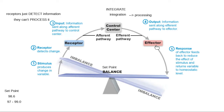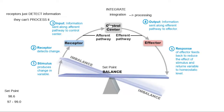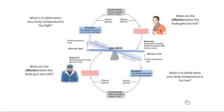With homeostasis we're constantly doing this, so think about it more like a loop. It's always receptors, control center, effector — constantly cycling. If we get out of balance the other way, we go down our other loop. A receptor talks to the control center; if needed, the control center talks to an effector. We are constantly monitoring these things simultaneously, so an effector might be trying to lower temperature while the receptor is still detecting too-high temperature.